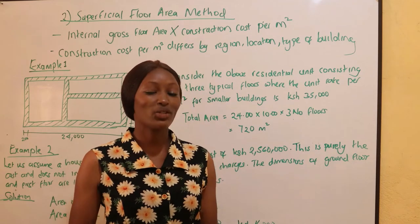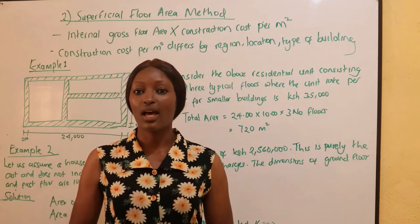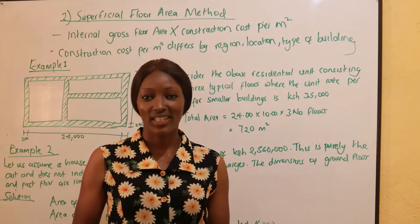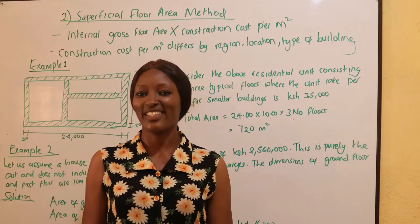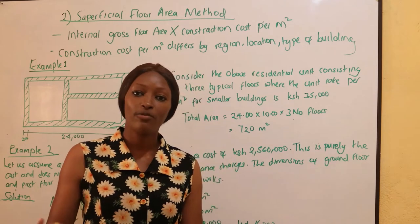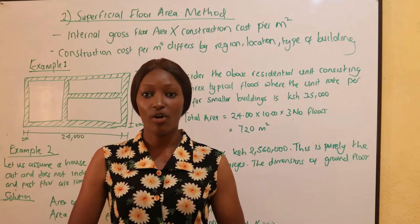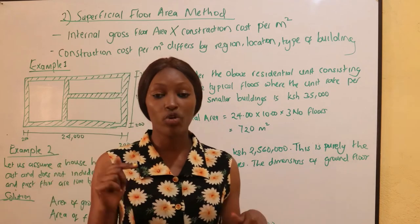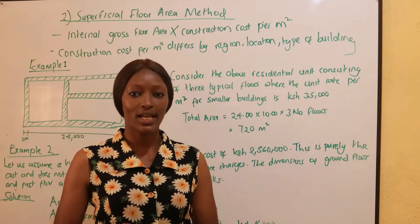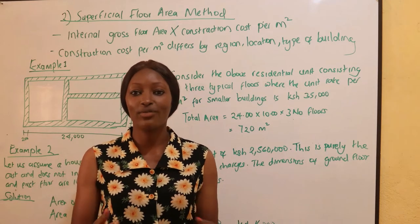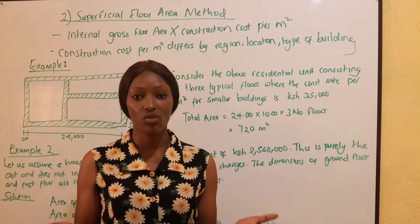The dimensions have to be measured internally. The Superficial Floor Area Method is the simplest method which gives an almost accurate cost when estimating. The functional unit method was used in preliminary investigations just for a rough figure, but the superficial floor area method gives an almost accurate calculation of cost. The key thing to remember is that we measure the building internally — even if you're given external wall dimensions, you must deduct the walls.